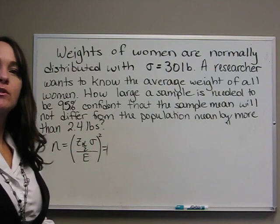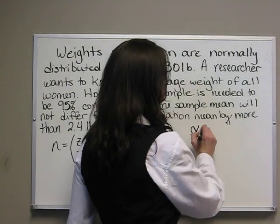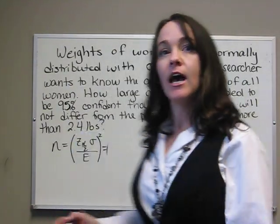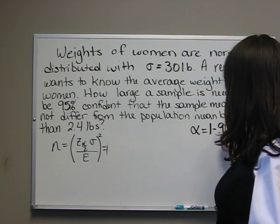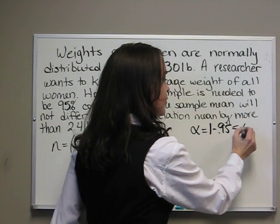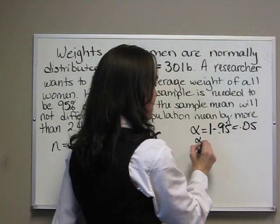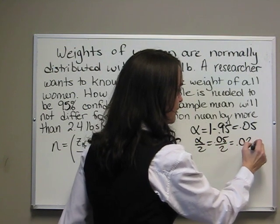z sub alpha over 2 is the only one we have to find. We've talked about finding this before with confidence intervals. Alpha is 1 minus our confidence, so 1 minus 0.95 equals 0.05. Now we divide that number by 2 and get 0.025.